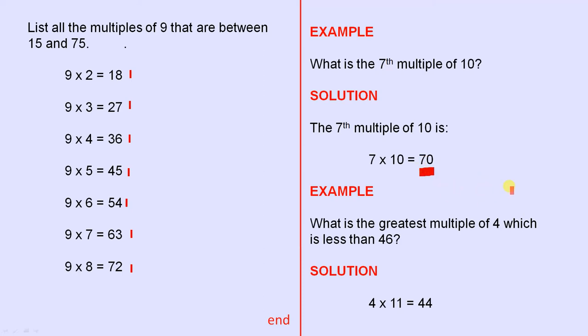Another example. What is the greatest multiple of 4 which is less than 46? So you have to multiply 4 by something and the answer has to be less than 46 and as close as possible to 46. 4 times 11 is 44.